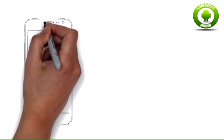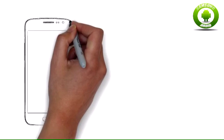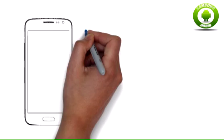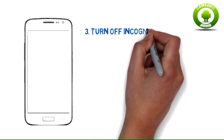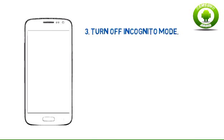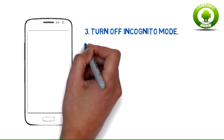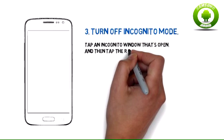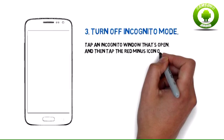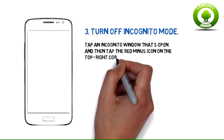Step 3: Turn off incognito mode. Tap an incognito window that's open, and then tap the red minus icon on the top right corner of the tab. This should get you back into normal browsing.